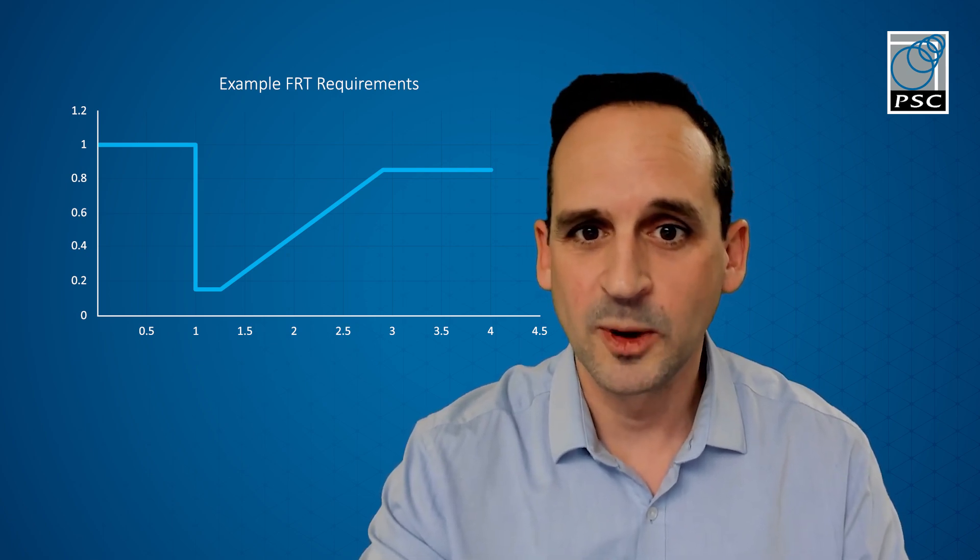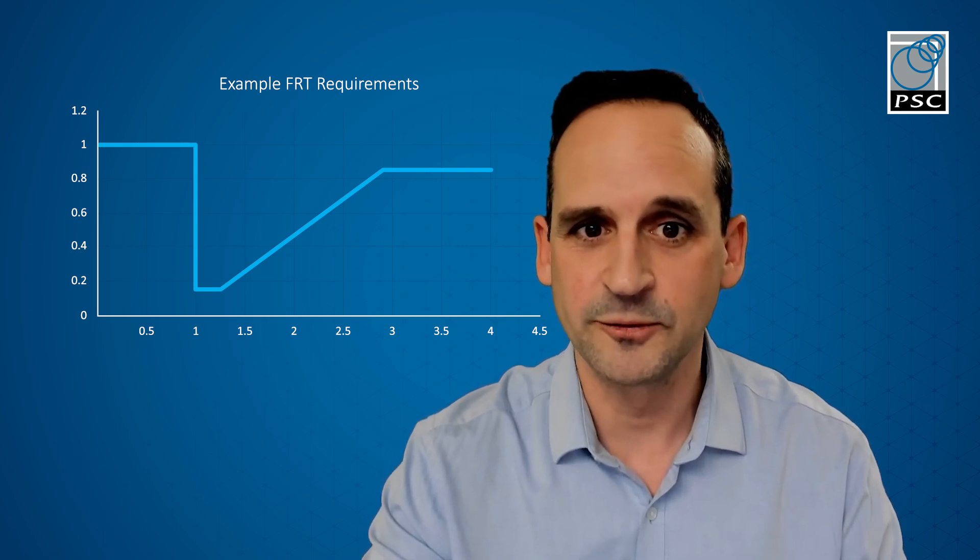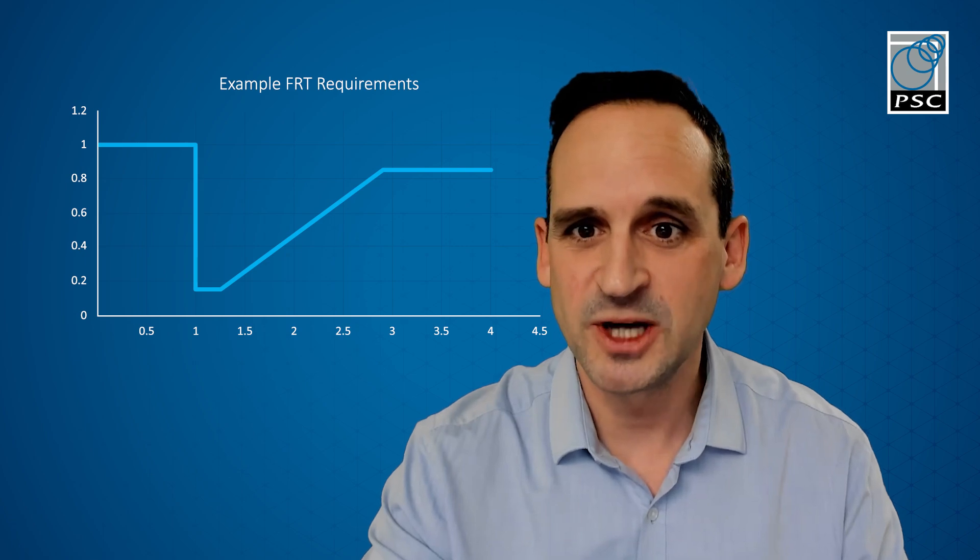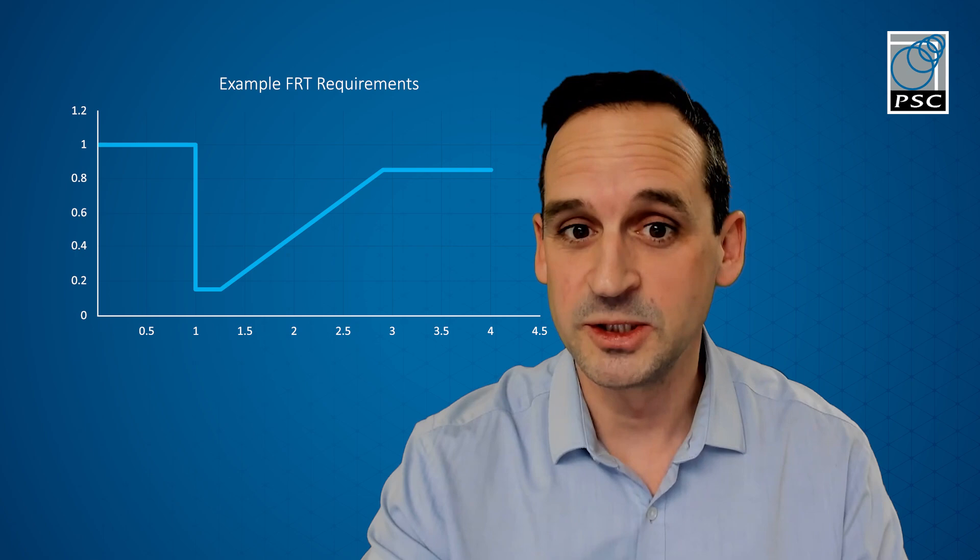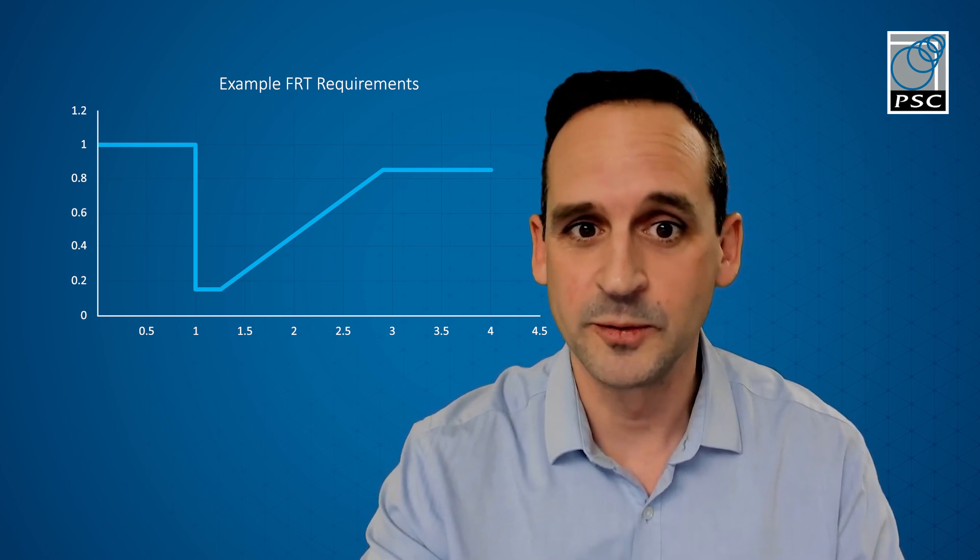The graph shows the lower limit of the voltage where the generator must remain connected during and after the fault. If the voltage at the connection point is above the line, then the generator must be able to ride through the fault and remain connected. It's worth mentioning that this type of study can be known as a low voltage ride-through as well as a fault ride-through study.